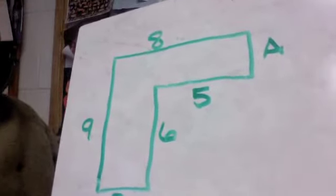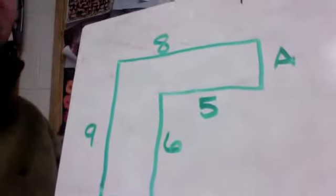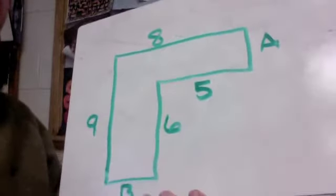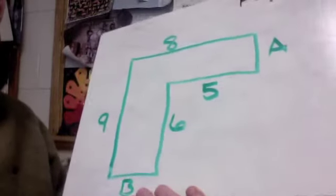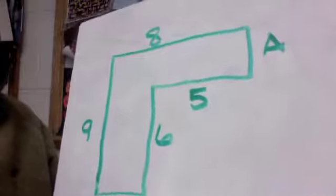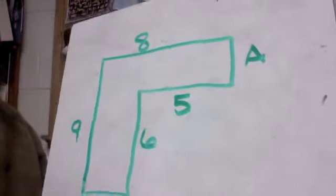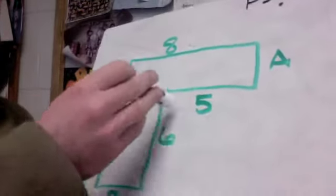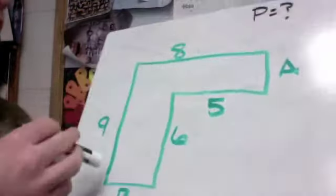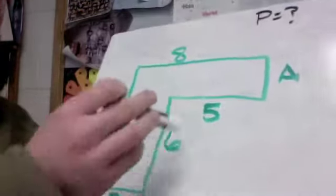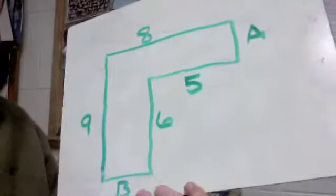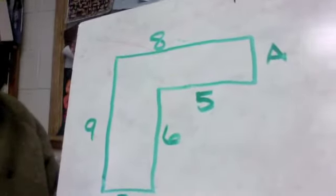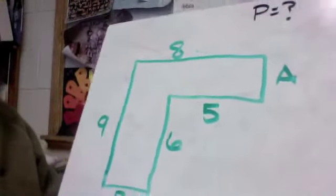Next example — make sure you remember this is not drawn to any type of scale, so we have to use the numbers they give us. The perimeter is going to be everything added together, but we have a B and an A we don't know. So we need to figure them out. Let's start with A.